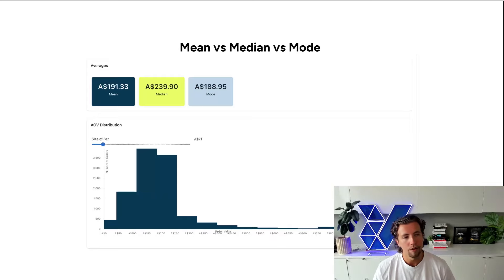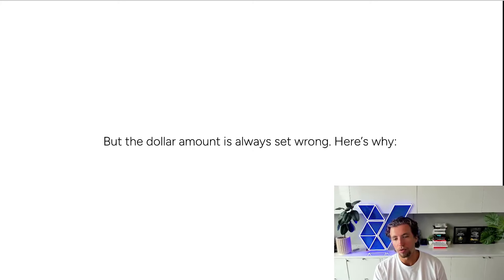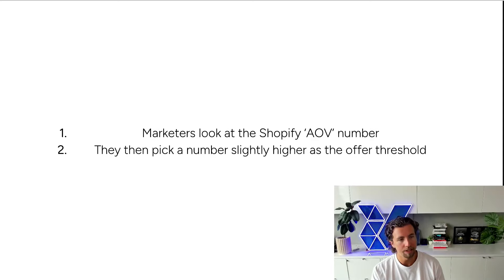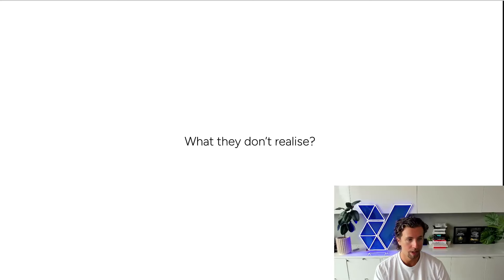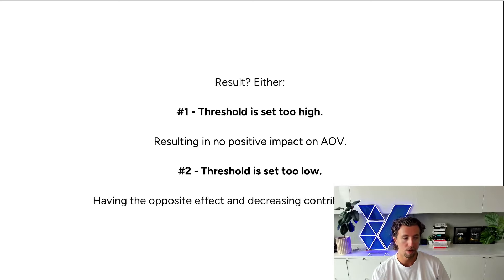In regards to mean versus median versus mode: we've all seen the classic free shipping over $100, but the dollar amount is almost always set wrong. Marketers look at the Shopify AOV number on the back end and pick a number slightly higher as their offer threshold. What they don't realize is that number one, the threshold is set too high — resulting in no positive impact on AOV — or number two, they accidentally set the threshold too low, which has the absolute opposite effect and just decreases their contribution margins.